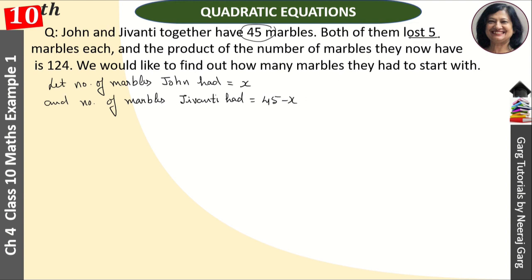Now both of them lost 5. John had x before, they lost 5, so x minus 5. And Jeevanti had 45 minus x, so this is also minus 5. And the product of number of marbles they now have is 124. The product is equal to 124.